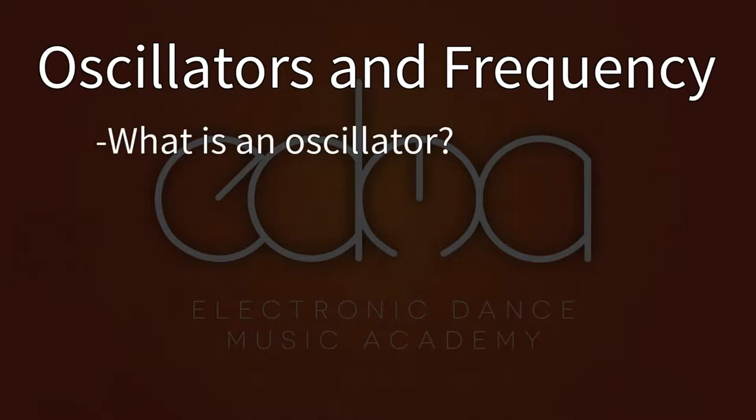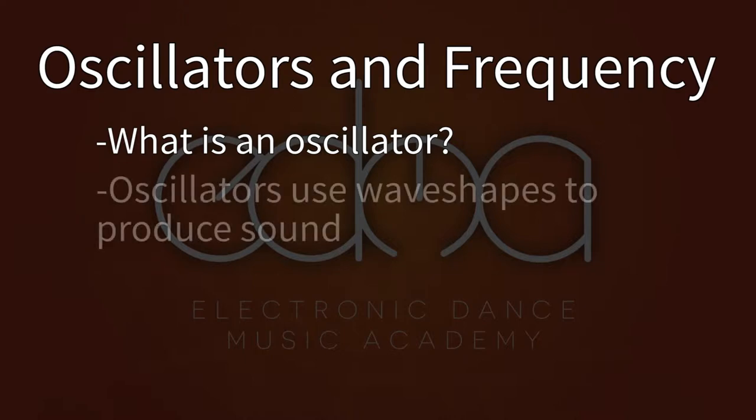So what is an oscillator? The word oscillation literally means repetition or cycle. In a synthesizer, an oscillator rapidly cycles through what is known as a wave shape to produce a sound. The sound differs depending on the shape of this wave.